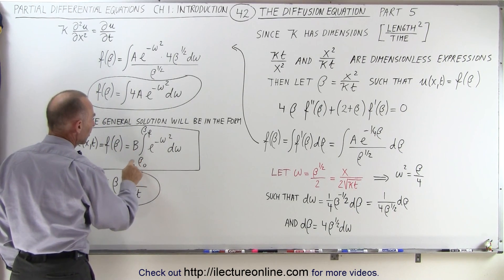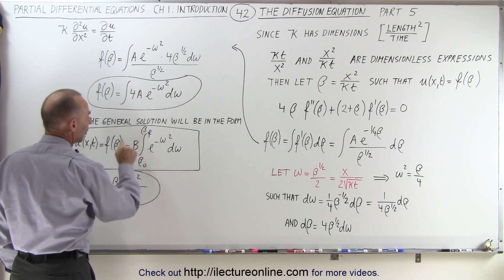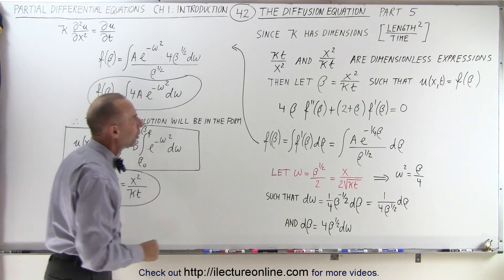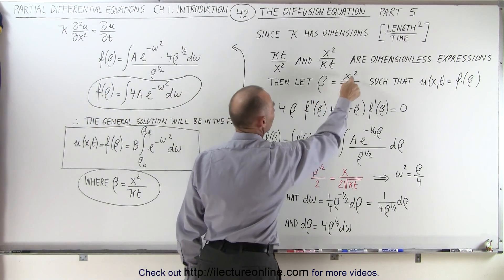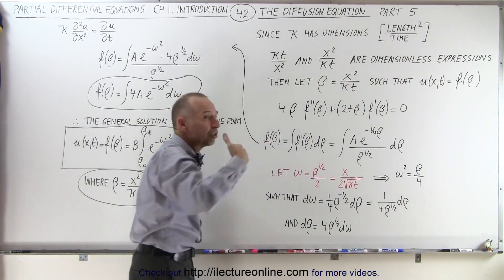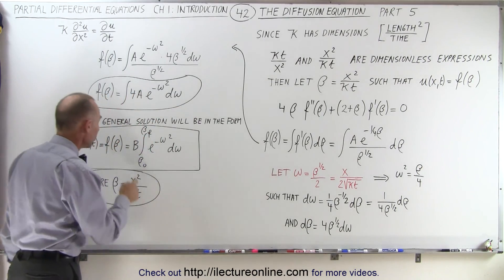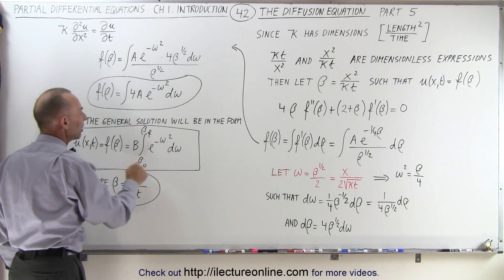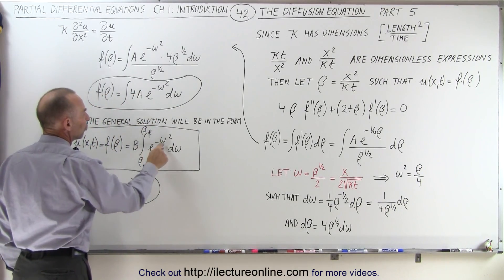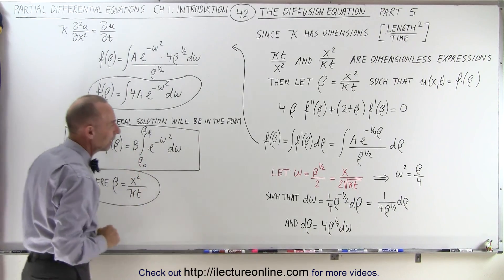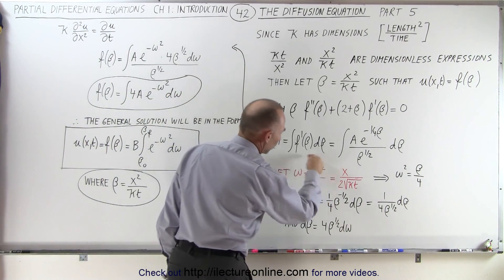Then we integrate that from beta initial to beta final, realizing that beta is a function of x and t. So whatever the initial conditions are and the final conditions, we plug those limits in, and then, of course, we have to have a relationship between omega and beta, and the relationship is right here.